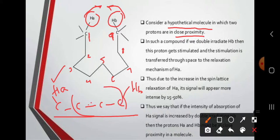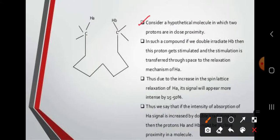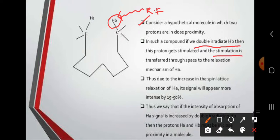In such a compound, if we perform double irradiation of HB — applying radio frequency irradiation to HB — the HB proton gets stimulated. This stimulation is transferred through space to the relaxation mechanism of HA.